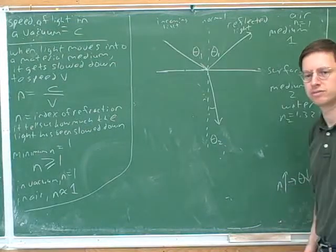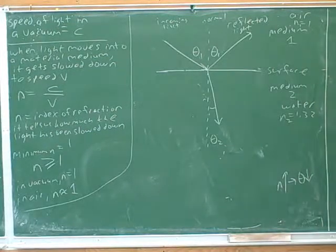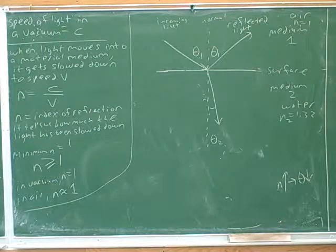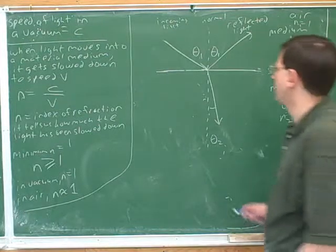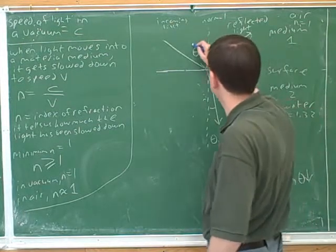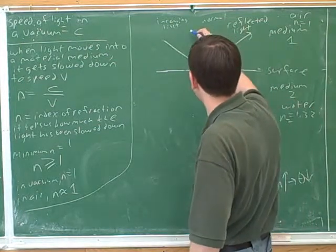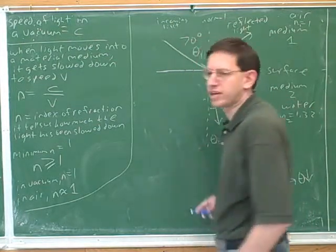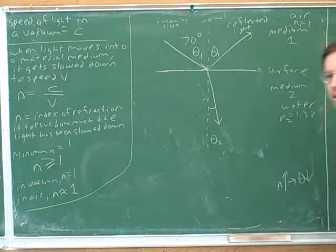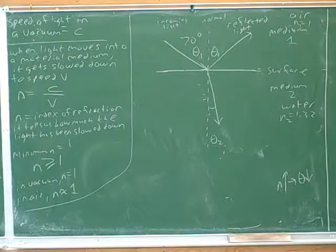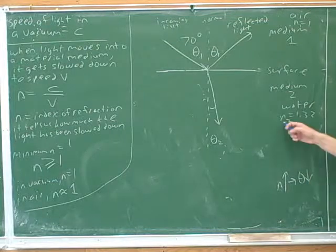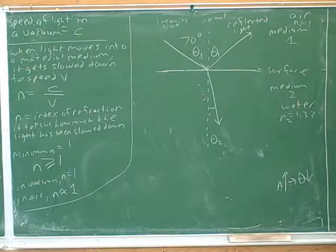Let's actually figure out how big theta 2 is. Let's take a piece of paper and work out how big theta 2 would be here. We're moving in at a 70 degree angle — the light originally came in at a 70 degree angle. We're going from air into water, and water has an index of refraction of 1.33.